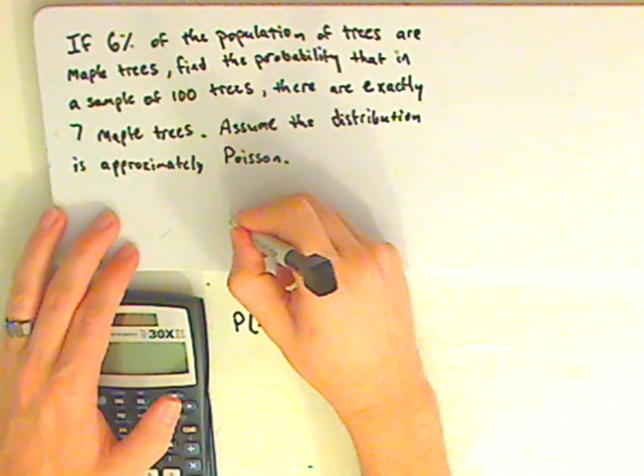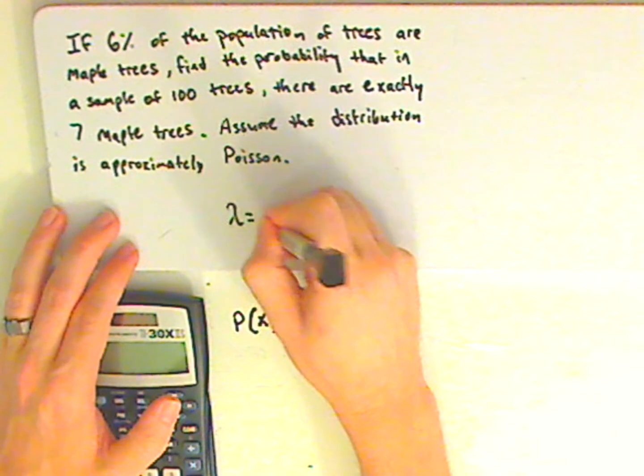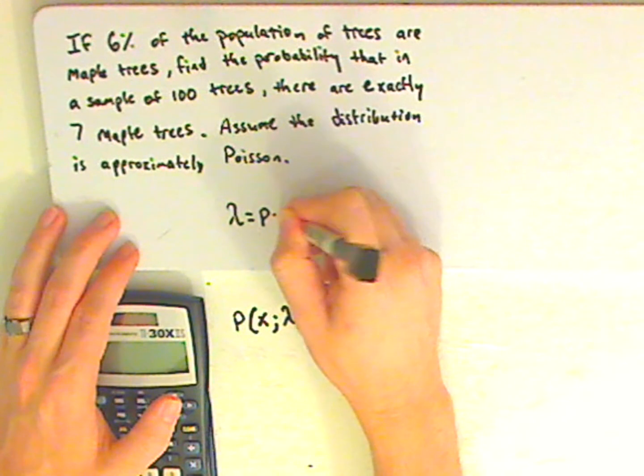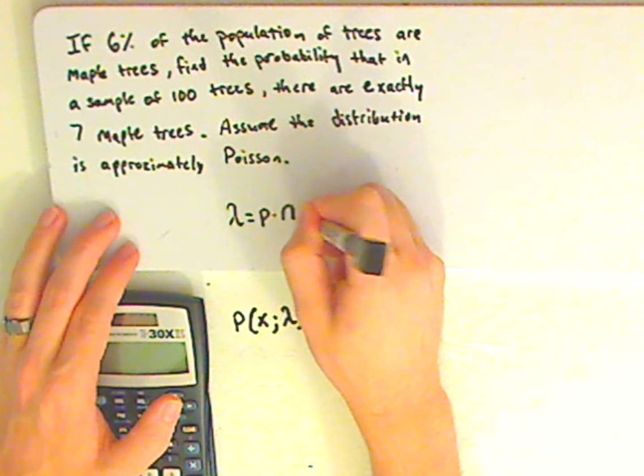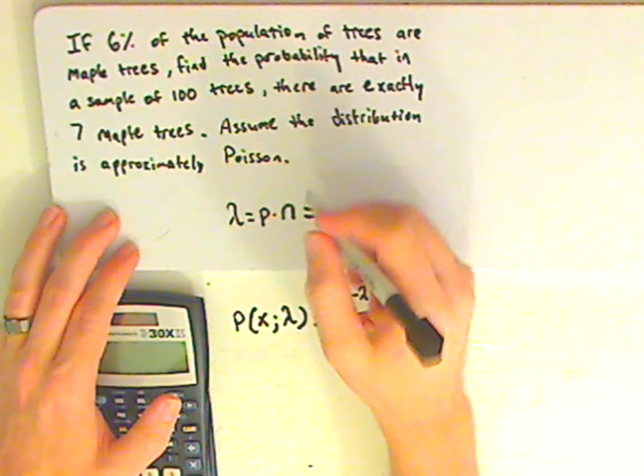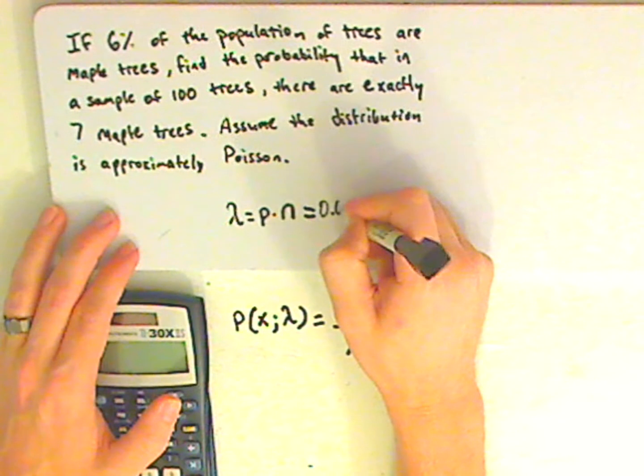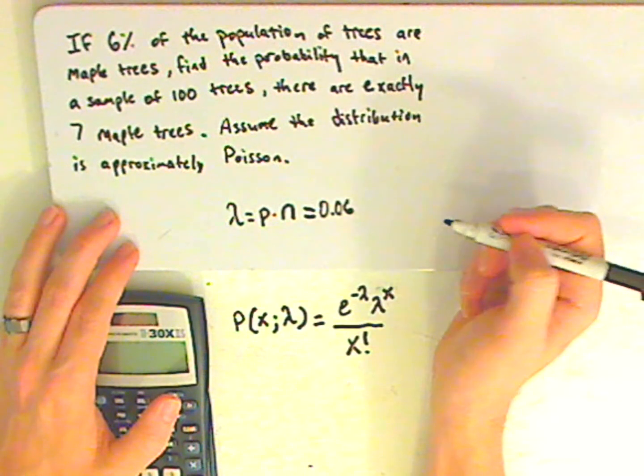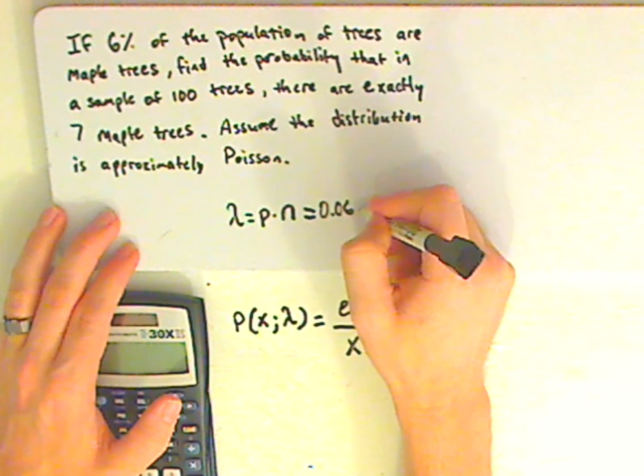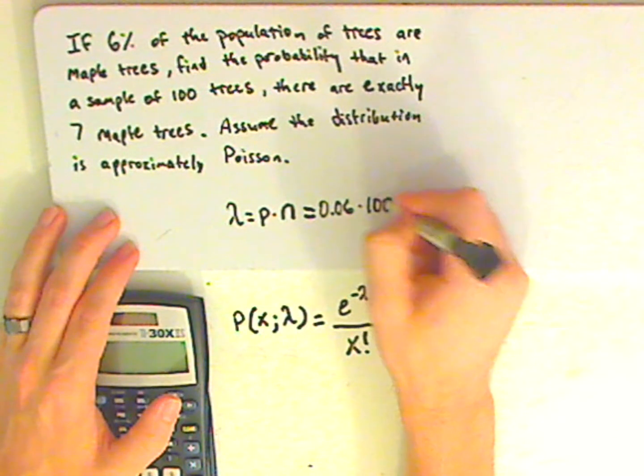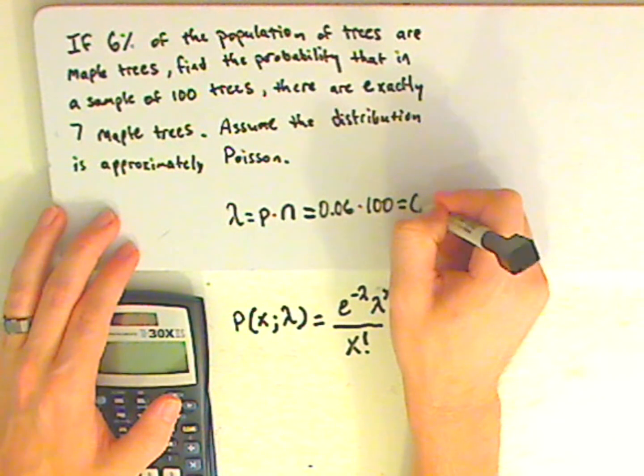So lambda would be that probability times the sample, which is N. So it would be 6%, which converted as a decimal is 0.06 times 100, and that gives me 6.